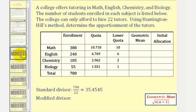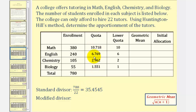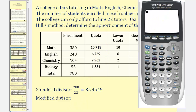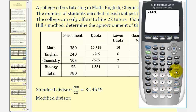Let's take a look at an example. A college offers tutoring in math, English, chemistry, and biology. The number of students enrolled in each subject is listed below. The college can only afford to hire 22 tutors. Using the Huntington-Hill method, determine the apportionment of the tutors. For step one, we find the standard divisor by summing the entire enrollment, which is 780, and dividing by the number of tutors, which is 22 — so the standard divisor is approximately 35.4545. Now to find the quota for each discipline, we divide each enrollment by the standard divisor. For math, we take 380 divided by 35.4545, which gives a quota of approximately 10.718.